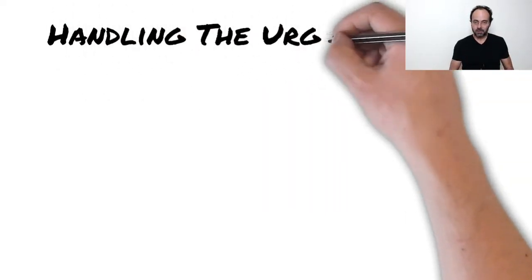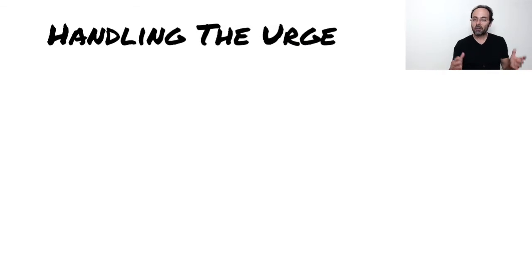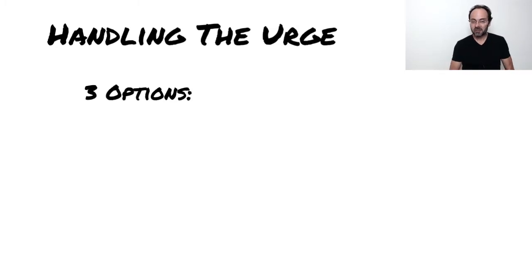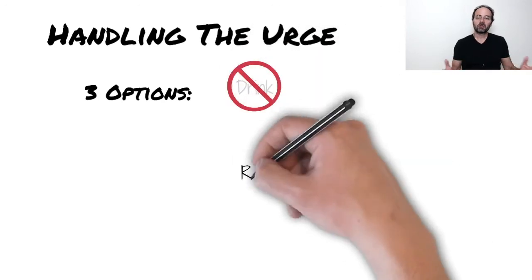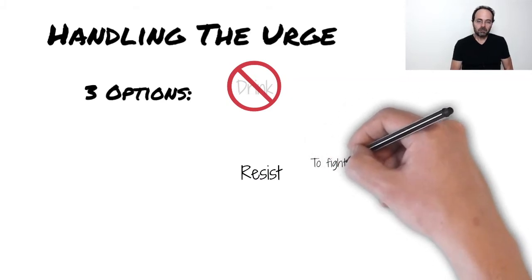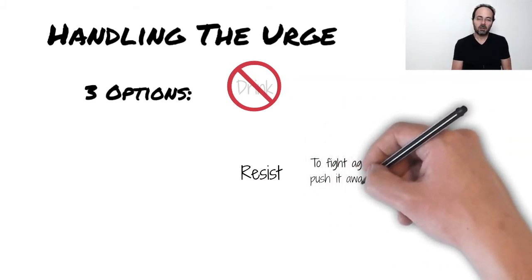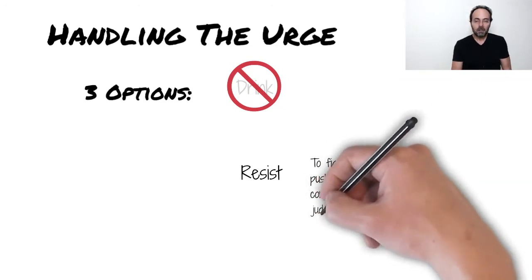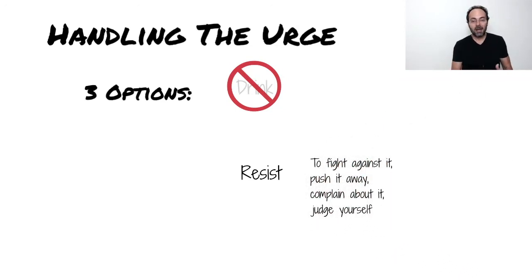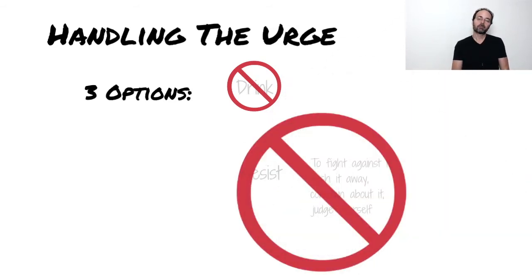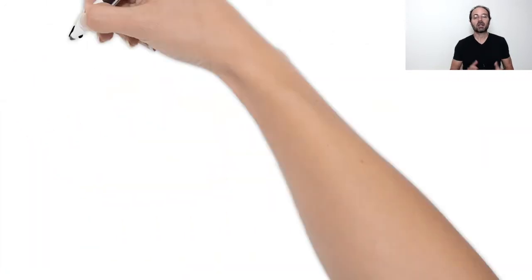So there you are — you've stopped on the verge of making your decision. You've got three options at this point. The first is the one that you're already good at, and that's just to give in to the urge and have a drink. The second option is to resist the urge, which means to fight against it. Resistance might involve complaining to yourself, wishing the feeling would go away, and a lot of judgment about having the urge and fighting it. You've probably tried resistance before and you know that it sucks and it's ineffective. So it's the third option I'm going to talk about that's your golden ticket — and I refer to this as allowing the urge.